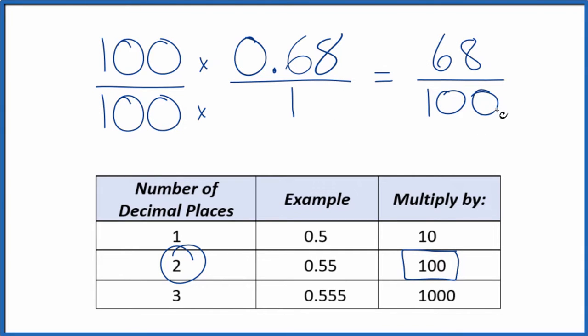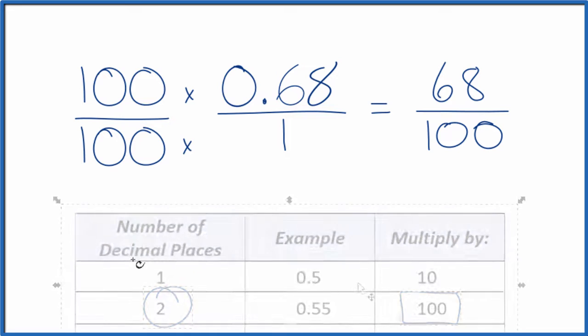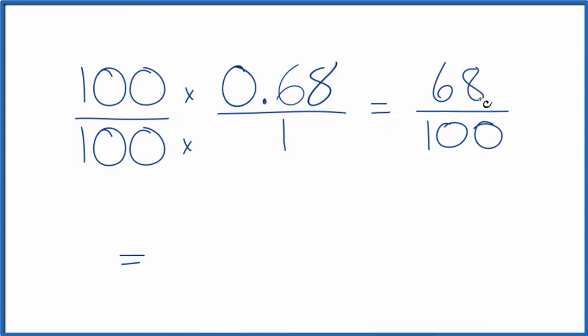So the decimal 0.68 is equal to 68 over 100 as a fraction, but we can reduce this fraction and simplify it a little bit further. So let's give ourselves some room. If we divide the numerator by 2 and the denominator by 2, since they're both even numbers, 68 divided by 2 is 34 and 100 divided by 2 is 50.